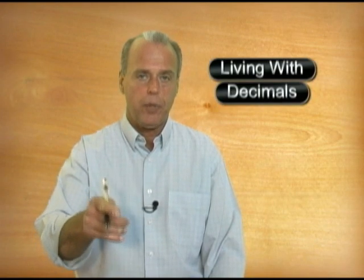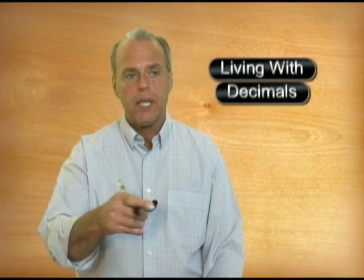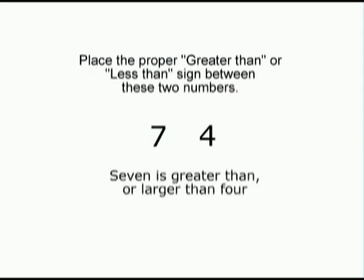Just write two numbers down next to each other and put the words between them in regards to their relationship with each other. Irving, can you place the arrowhead between these two numbers and tell me in words what it means? I read this as 7 is greater or larger than 4. I know that the tip of the arrowhead, or smaller end, points to the smaller number, and the open or larger end points to the larger number. So I know that when the arrow points to the right, it means greater or larger than.